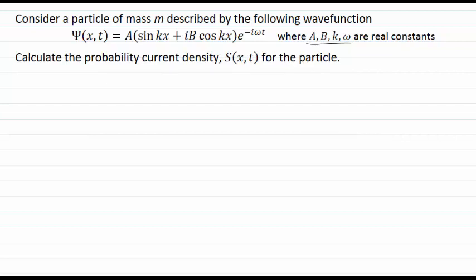This viscast will calculate the probability current density for a particle described by a particular wave function. Pause the video and look at the question carefully.